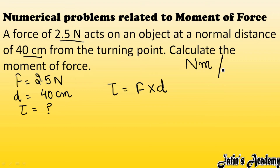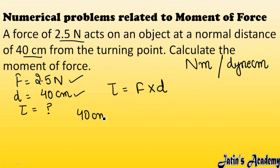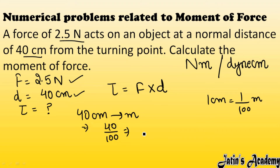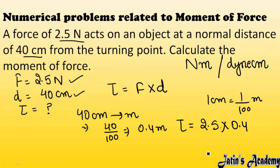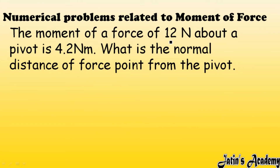Converting: 40 cm = 40/100 = 0.4 meter. Using the formula: Torque = Force × perpendicular distance = 2.5 N × 0.4 m = 1 newton-meter. So the torque or moment of force is 1 newton-meter.